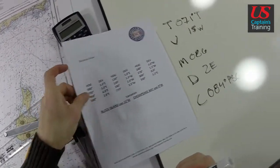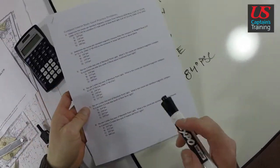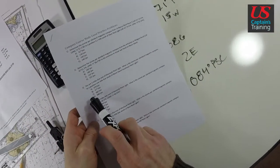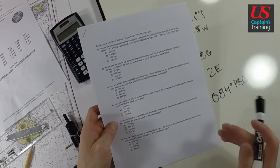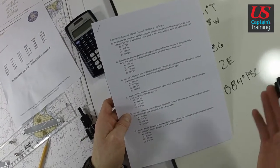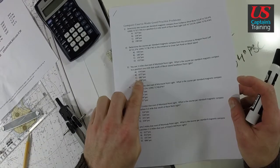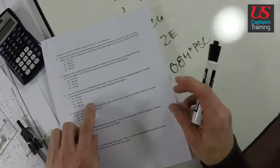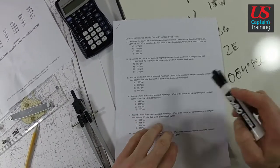Now let's check our answers. We have 083. That's really close. In a lot of these problems, give yourself plus or minus 1 degree, 2 degrees. So right here we have 3 is C, 083. We got 084 PSC. That's pretty darn close.